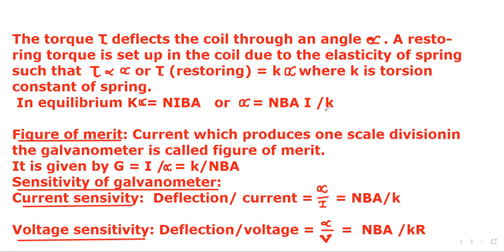Now we define figure of merit of galvanometer. Current which produces one scale division in the galvanometer is called figure of merit. It is given by capital G, which is written as I upon alpha. So if we find I upon alpha from here, we get k divided by NBA.